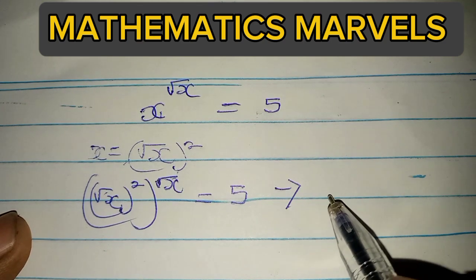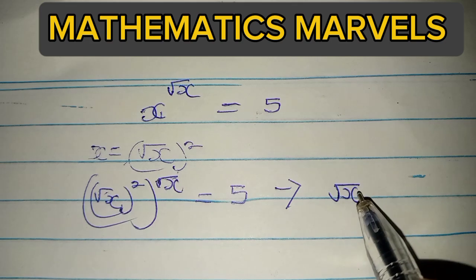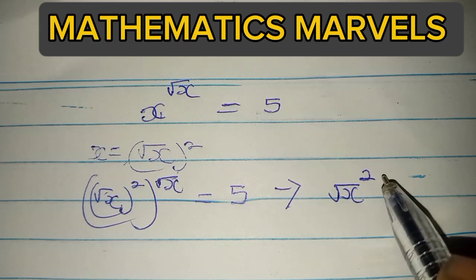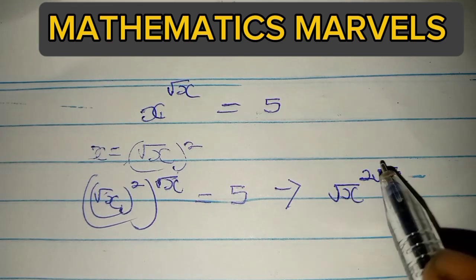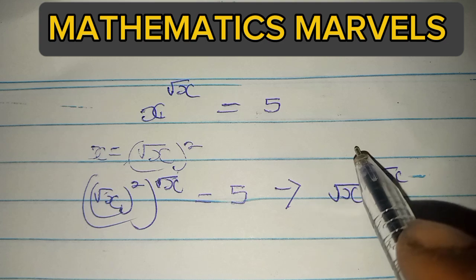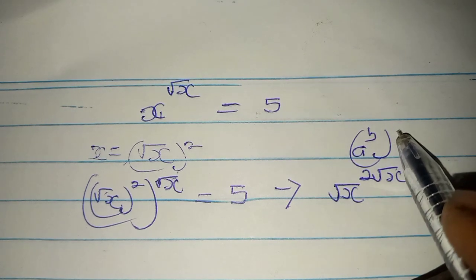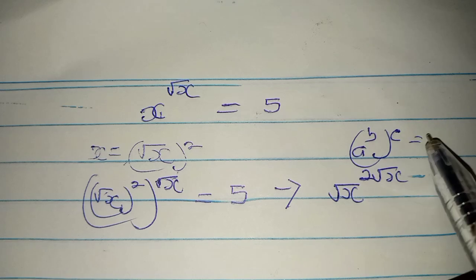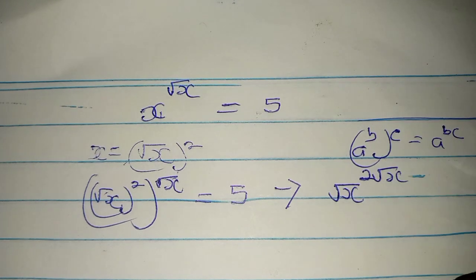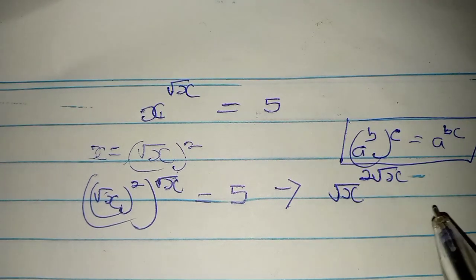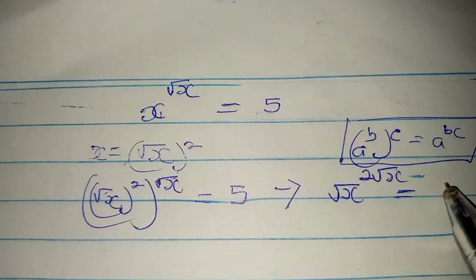So we can get here √x times 2. Multiply the power together, we have √x. The reason why I multiply the power together is because I use the two of these. We use A to the power of B in bracket, to the power of C equals A to the power of BC. So using this property, we have this equals 5.